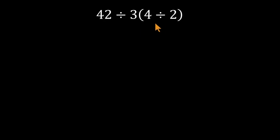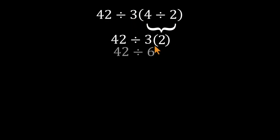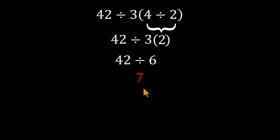Most folks head straight into the parentheses. 4 divided by 2 gives you 2. Then they multiply that with the 3 — 3 times 2 equals 6. And finally, 42 divided by 6 equals 7. Clean and quick, but absolutely wrong.